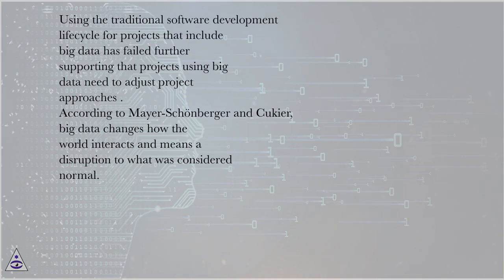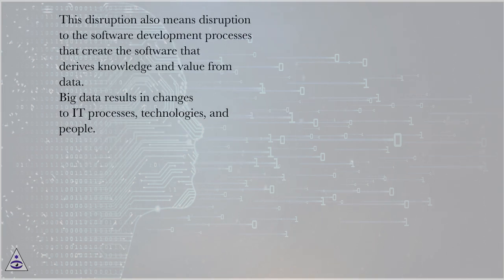Using the traditional software development life cycle for projects that include big data has failed, further supporting that projects using big data need to adjust project approaches. According to Schoenberger and Kukia, big data changes how the world interacts and means a disruption to what was considered normal. This disruption also means disruption to the software development processes that create the software that derives knowledge and value from data. Big data results in changes to IT processes, technologies, and people.